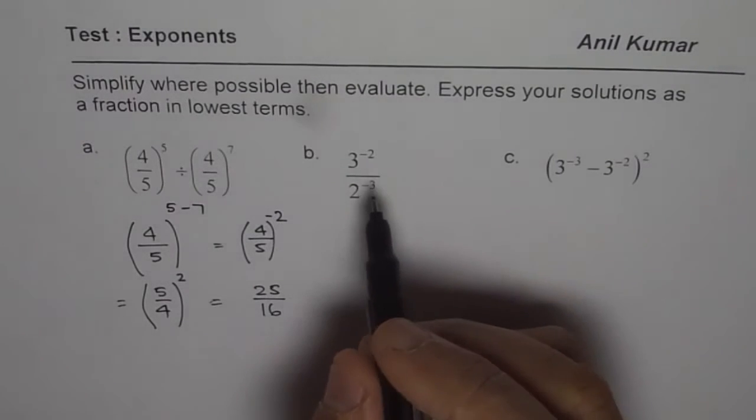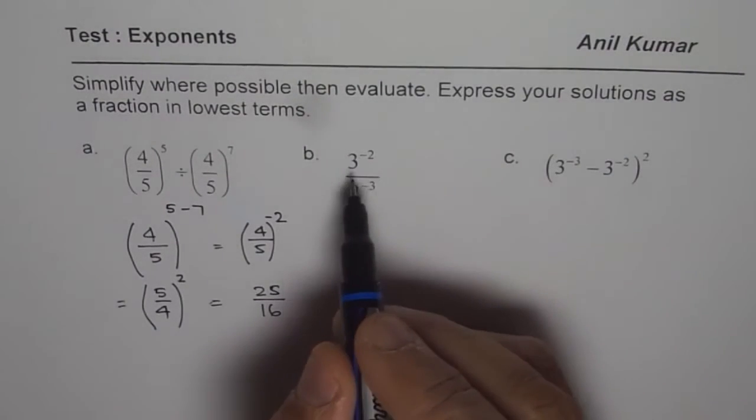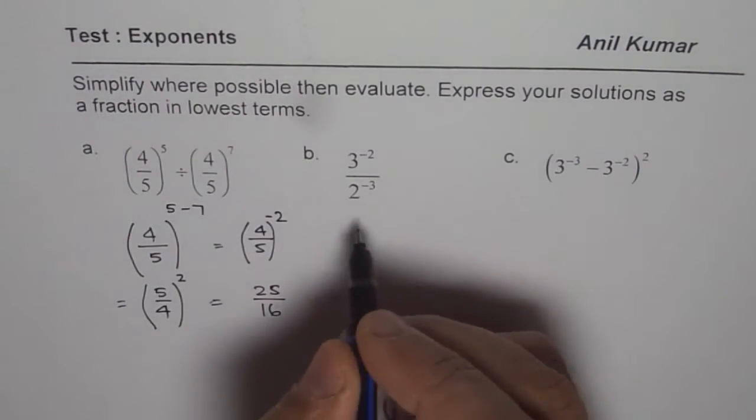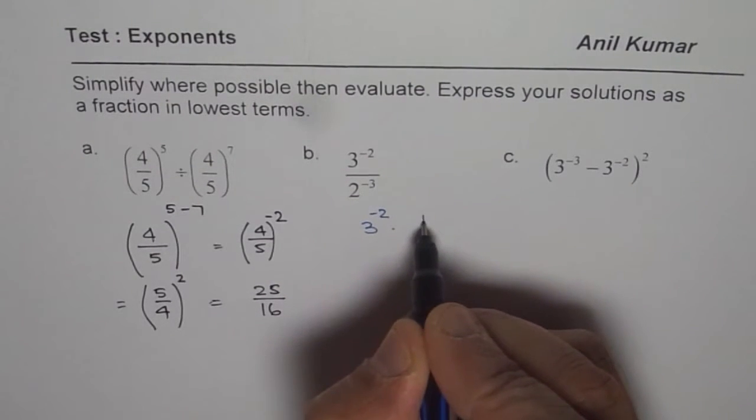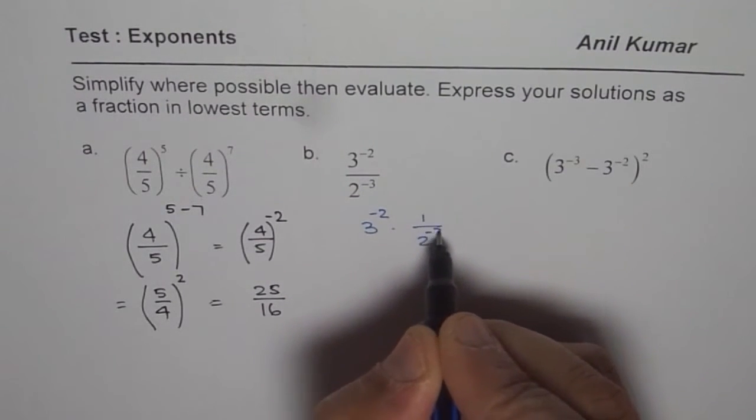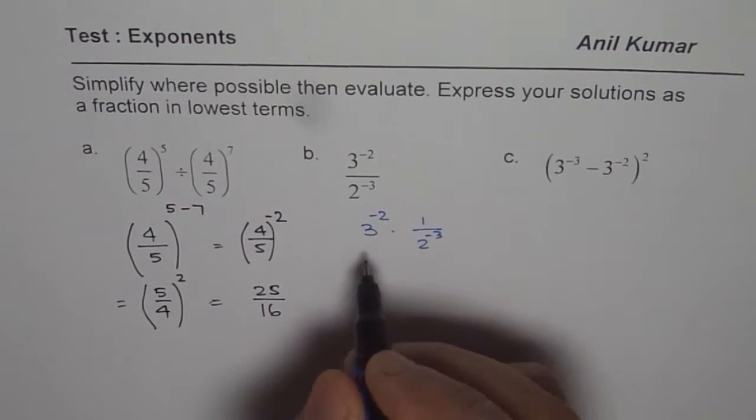Now let's look into the second one. Here we have 3 to the power of minus 2 divided by 2 to the power of minus 3. Let's write it as 3 to the power of minus 2 times 1 over 2 to the power of minus 3. Minus power means reciprocals.